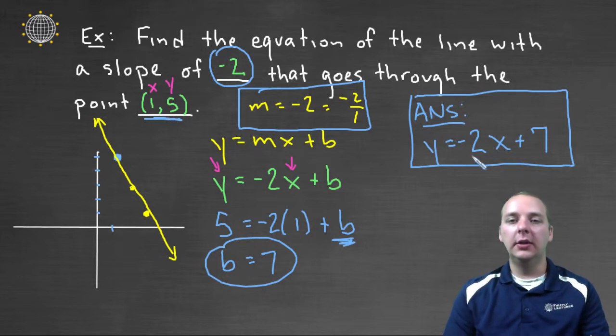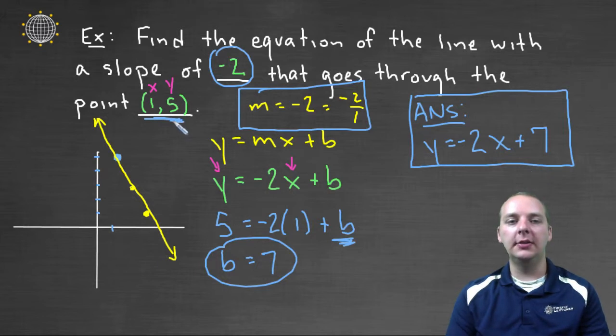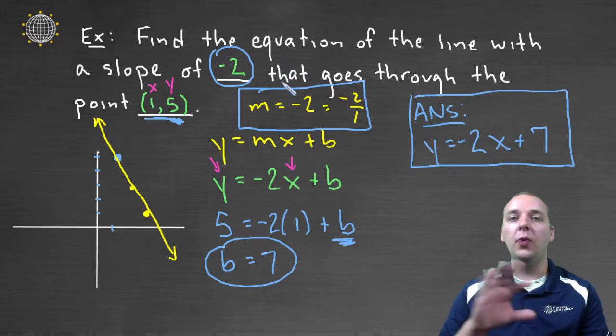If you want to double check real quick, just look at it. The m is negative two. And try plugging in one. Negative two times one is negative two. Negative two plus seven really does make five. So anyways, that's how we find the equation of a line given a slope and some random point.